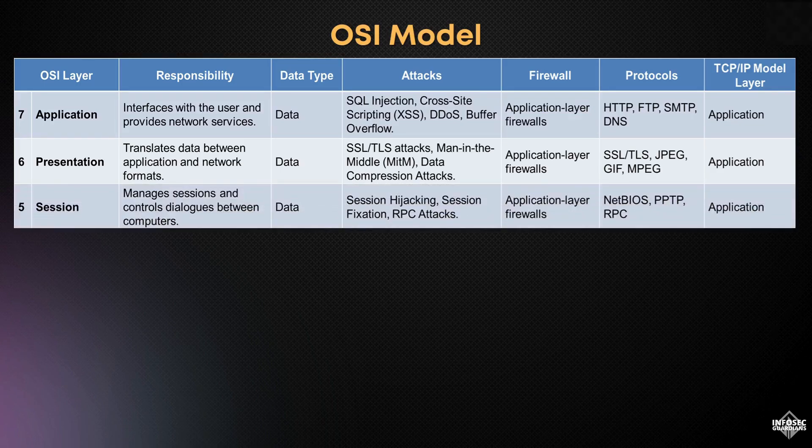Layer 5 is the session layer, which manages sessions and controls dialogues between computers. It ensures that sessions are established, maintained, and terminated properly. However, it can be targeted by session hijacking and remote procedure call (RPC) attacks. Application layer firewalls are also effective here, with protocols like NetBIOS, PPTP, and RPC being used.